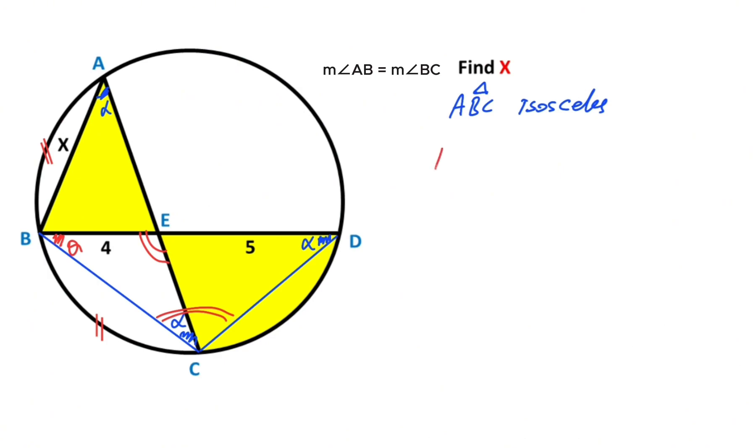So triangle BEC and triangle BCD are similar. We know that triangle ABC is an isosceles triangle. So if here is x, this length is also x units.